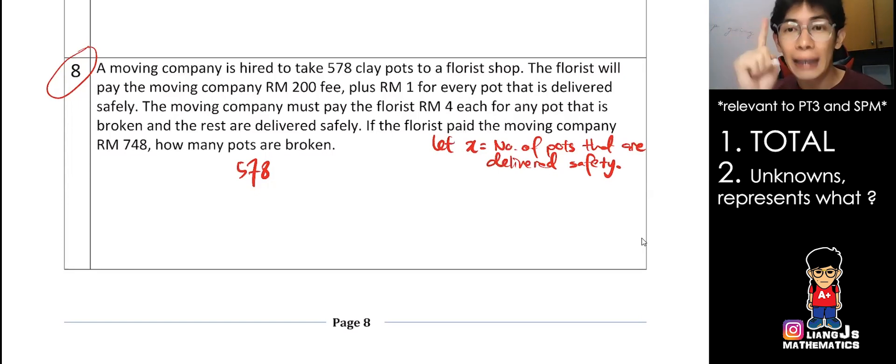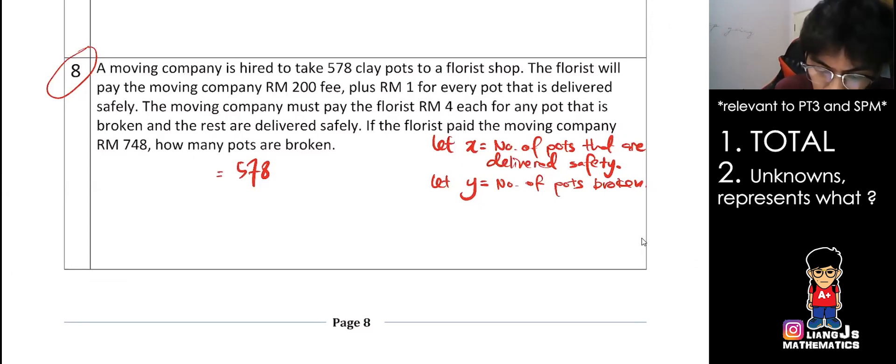And then the moving company must pay the florist RM 4 each for any pots that is broken. So it means the moving company has to be paid. Must be paid. So let y equals to number of pots that are broken. So students, can you see I separate it nicely? Students might ask me, 'Teacher, in SPM do I have to write this detail?' The answer is, if you want to write all these things it's fine. Your final answer, you're going to write it specifically after you get your answer. You have to put it there - how many pots are delivered safely, how many pots have broken, you have to write that. If not, you write it over here then you just leave it as your one. So it's up to you. You write it over here or you write it final. As long as your teacher knows what is x and y. So I get these two things ready.